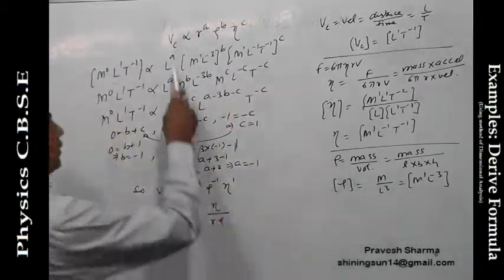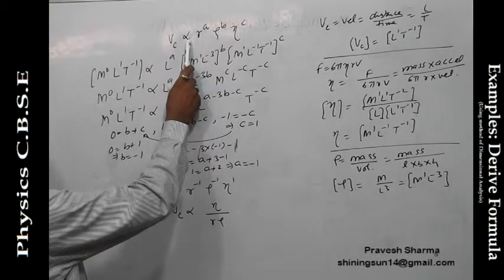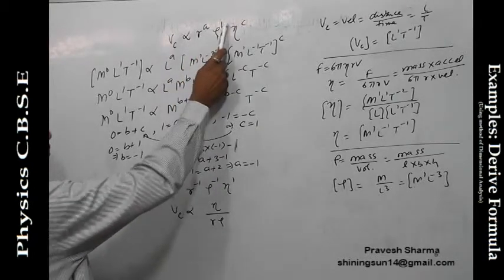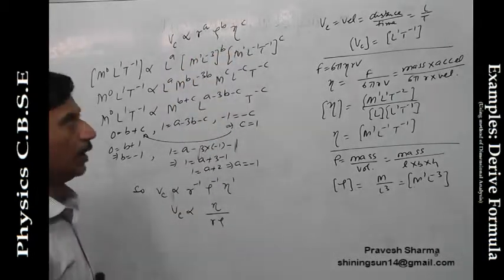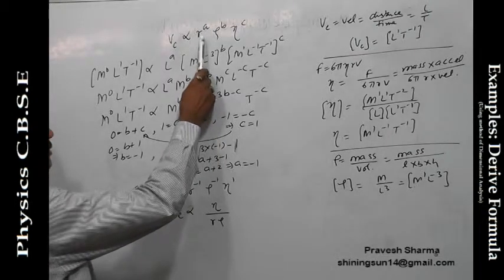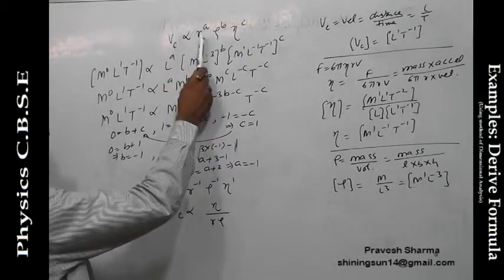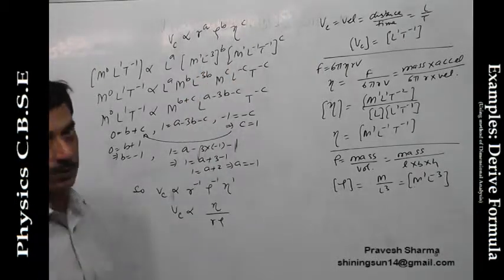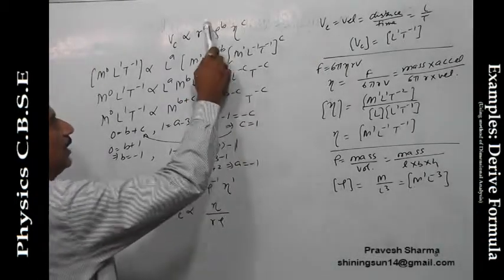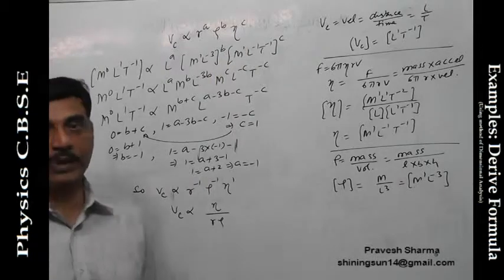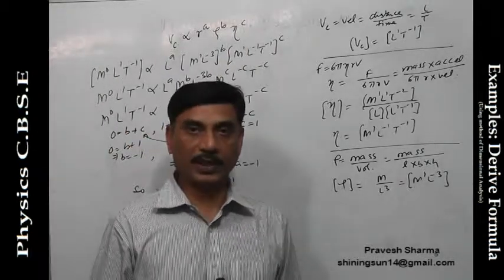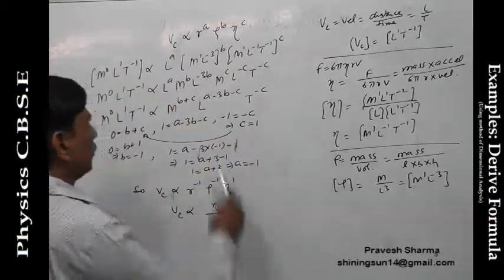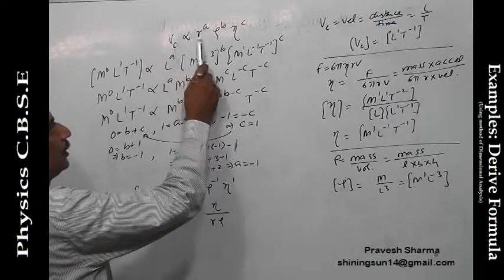We write as Vc critical velocity is proportional to r to the power A, rho to the power B, eta to the power C. r is the radius of the capillary tube, rho is the density, eta is coefficient of viscosity. How they are dependent? We have written as A, B, and C and we are going to find out the values of A, B, and C. First of all, we write the dimension formula for these quantities.